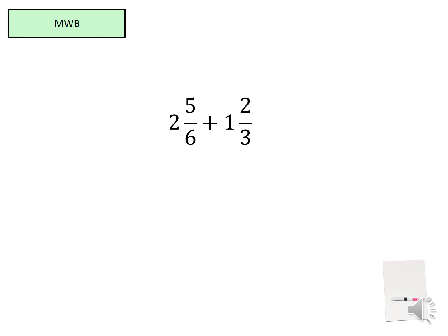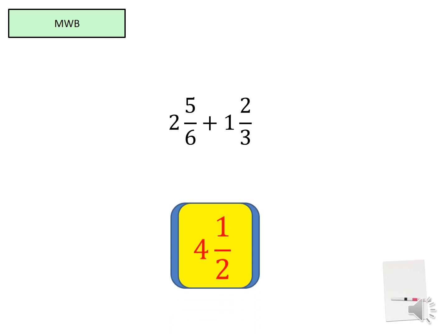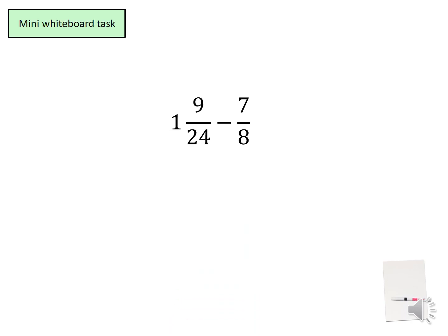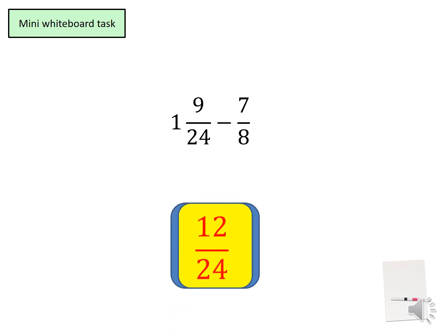Can you please have a quick go at this question? Welcome back. The answer is four and a half. Can you now please have a quick go at this question, and once finished, come back and I'll go through it. Welcome back. The answer is twelve over twenty-four. Can we simplify that? Yes — the highest common factor of twelve and twenty-four is twelve. Dividing numerator and denominator by twelve gives one half.